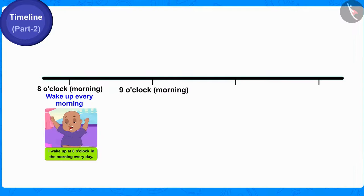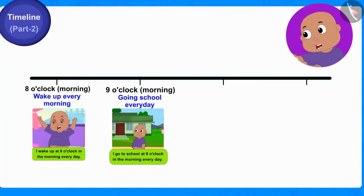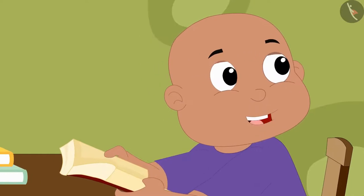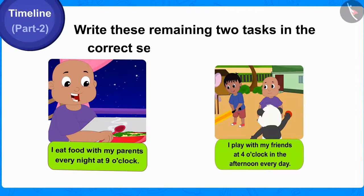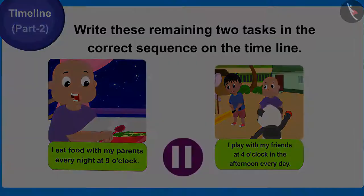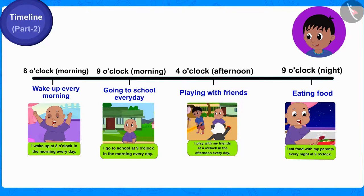Raju now wrote 9 o'clock in the morning on the timeline and drew a picture below it. Bablu got excited seeing Raju's picture. It looks so much prettier than the daily routine I had written. Children, now can you write these remaining 2 tasks in the correct sequence on the timeline? If you wish to, you can stop the video and find the answer. Well done children, you have written it correctly.